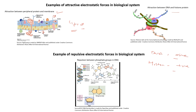What about repulsive electrostatic forces in the biological system? In DNA itself — if we look at the DNA, nucleotides are connected by phosphodiester bonds, with phosphate groups present along both strands. These phosphate groups are all negatively charged, so they repel each other. This is an example of repulsive electrostatic forces.